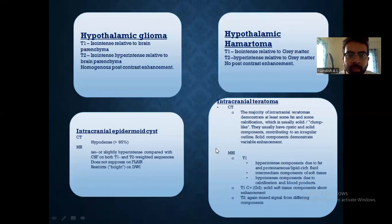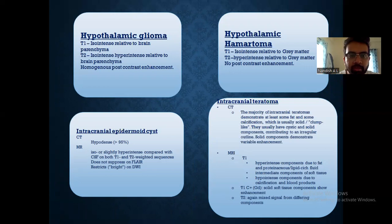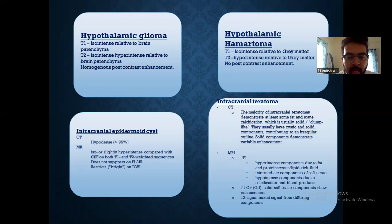The next differential is hypothalamic glioma. On T1, it appears isointense relative to brain parenchyma. On T2, it appears iso to hyperintense relative to brain parenchyma, and it shows homogeneous post-contrast enhancement. The next differential is intracranial epidermoid cysts, which appear hypodense on CT, and on MRI appear iso to slightly hyperintense compared with CSF on both T1 and T2 sequences, and do not suppress on FLAIR.